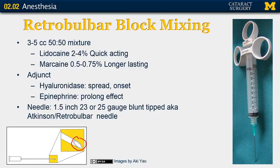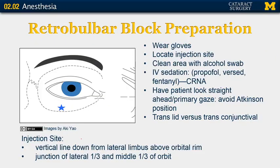To prepare for the block, identify the injection site. One way is to divide the orbit into thirds — it is the junction of the middle third and the lateral third. Another way is to draw a vertical line down from the lateral limbus; the point above the orbital rim is where you inject. Put on gloves and clean the area with an alcohol swab. You want the patient to be quite sedated — often propofol or Versed are used to render the patient nearly unconscious, since this anesthetic can be quite painful. Have the patient look in the straight-ahead position. Avoid the Atkinson position, which is having the patient look up and in, as this can expose the optic nerve to injury.